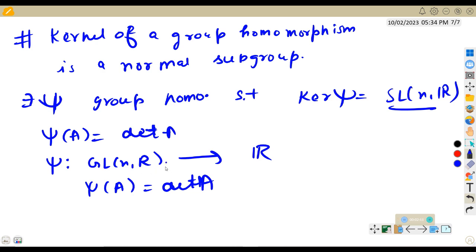First of all, when we talk about this, we need to talk about the product we are using. It is matrix multiplication and here the codomain is the set of all non-zero real numbers with the product group operation.